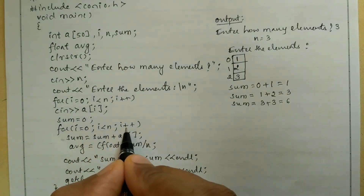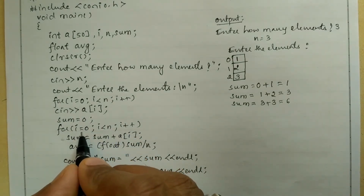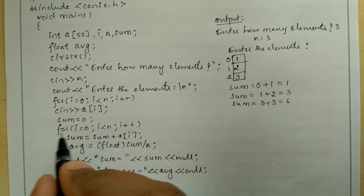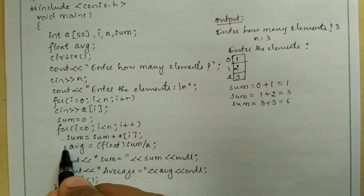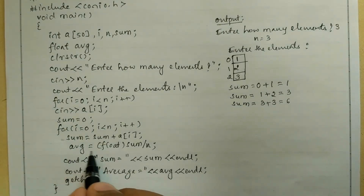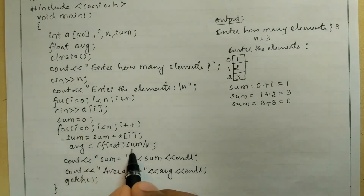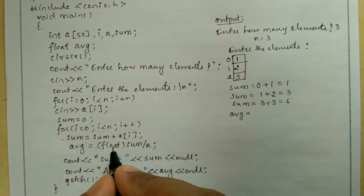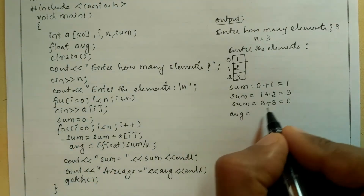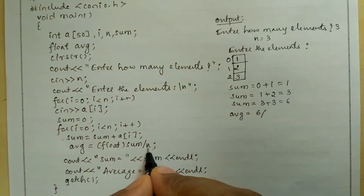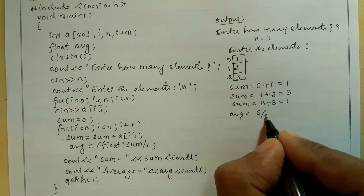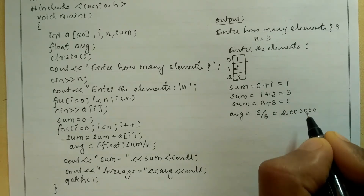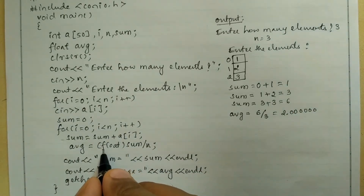Control transfers back, i is incremented to 3. Now 3 is less than 3 — condition fails, so control comes out of the loop. It executes the next statement: avg equal to float(sum) divided by n, which is float(6) divided by 3, giving us 2.000000 because we have converted it to float type.